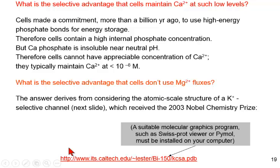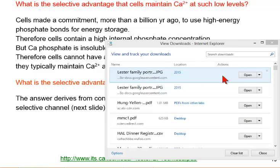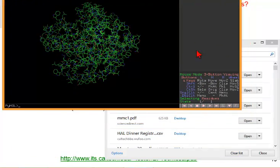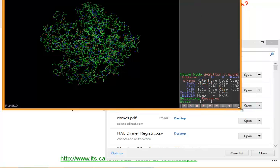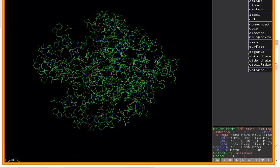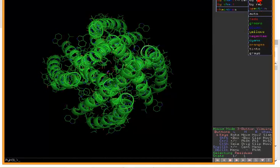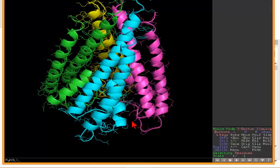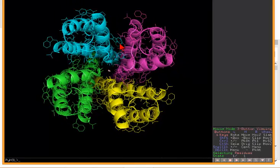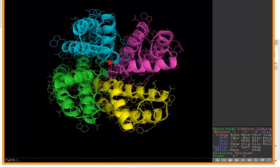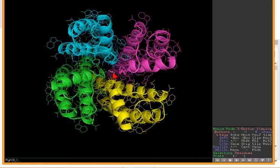What about magnesium? What's the selective advantage that cells don't use magnesium fluxes? This is a little trickier, but it's a very interesting scientific question. You have to consider the atomic scale structure of a potassium channel. If you happen to have a molecular viewer on your computer, doesn't everybody have a molecular viewer on their computer? This is Pymol, but you could use Swiss-PDBViewer as well. We will show the cartoon of the potassium channel and emphasize the colors by chain. Here we are. There are four identical subunits. It's a tetramer. The conducting pore through which the potassium ions flow is in the middle.